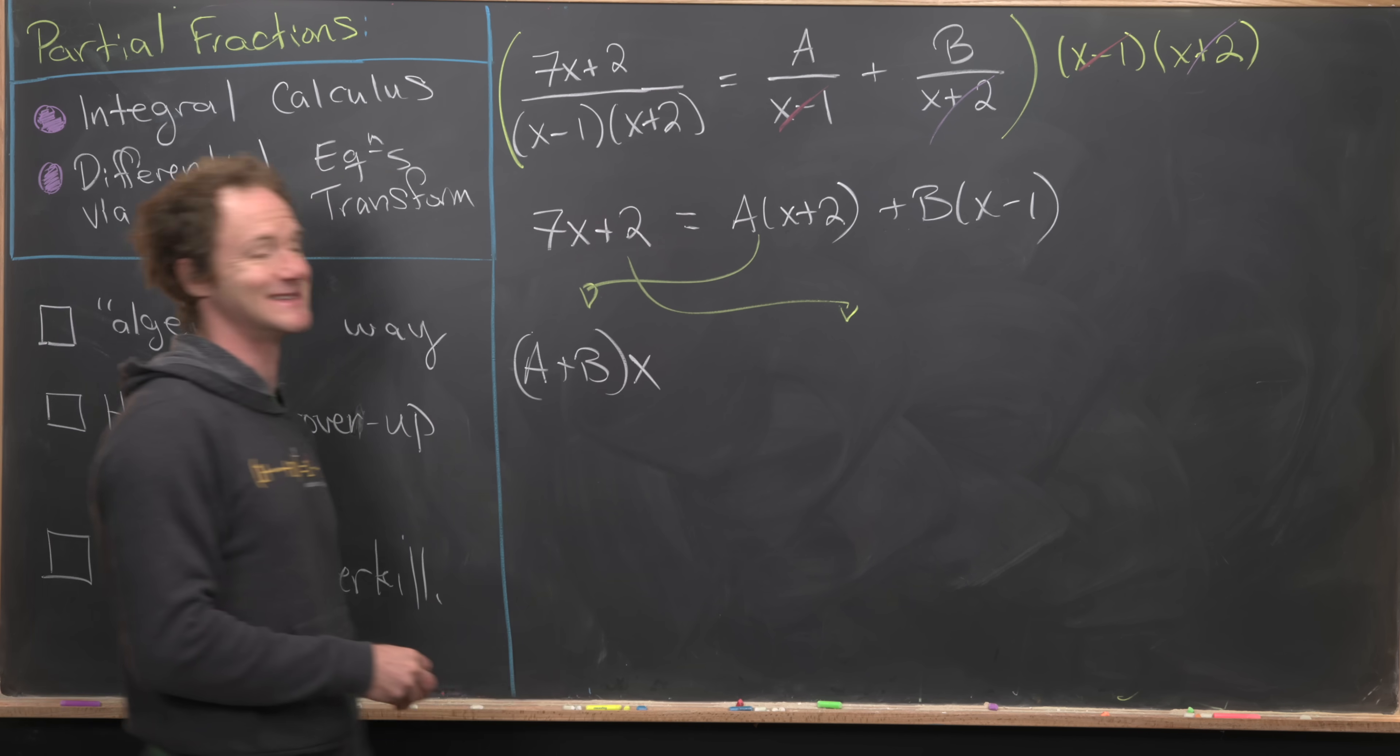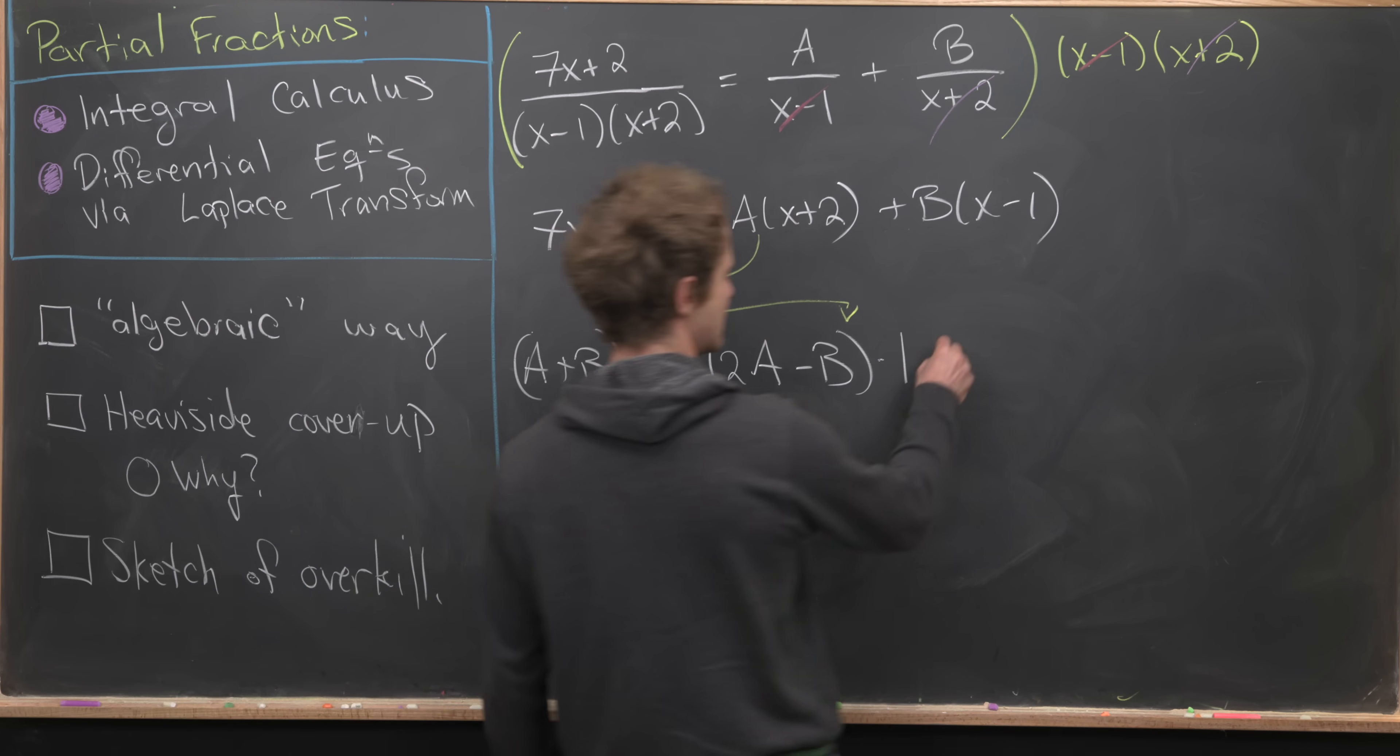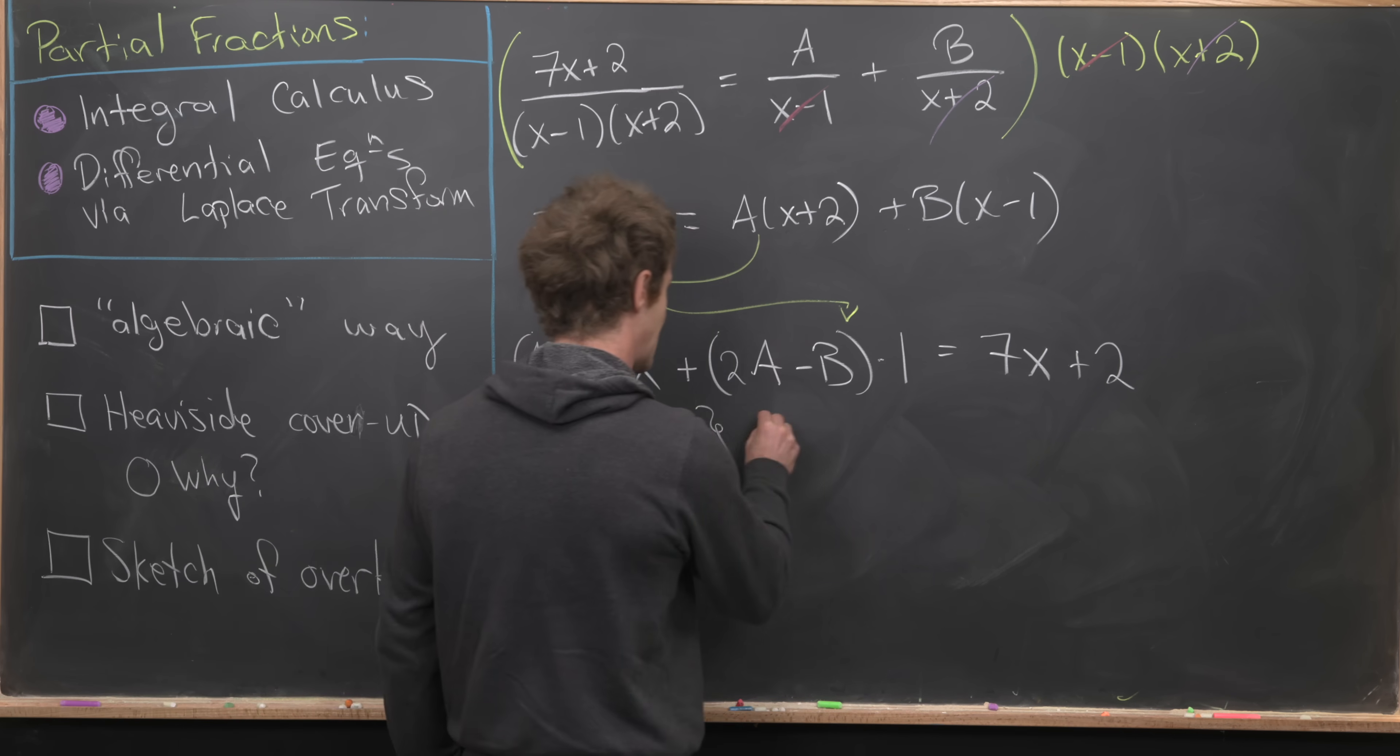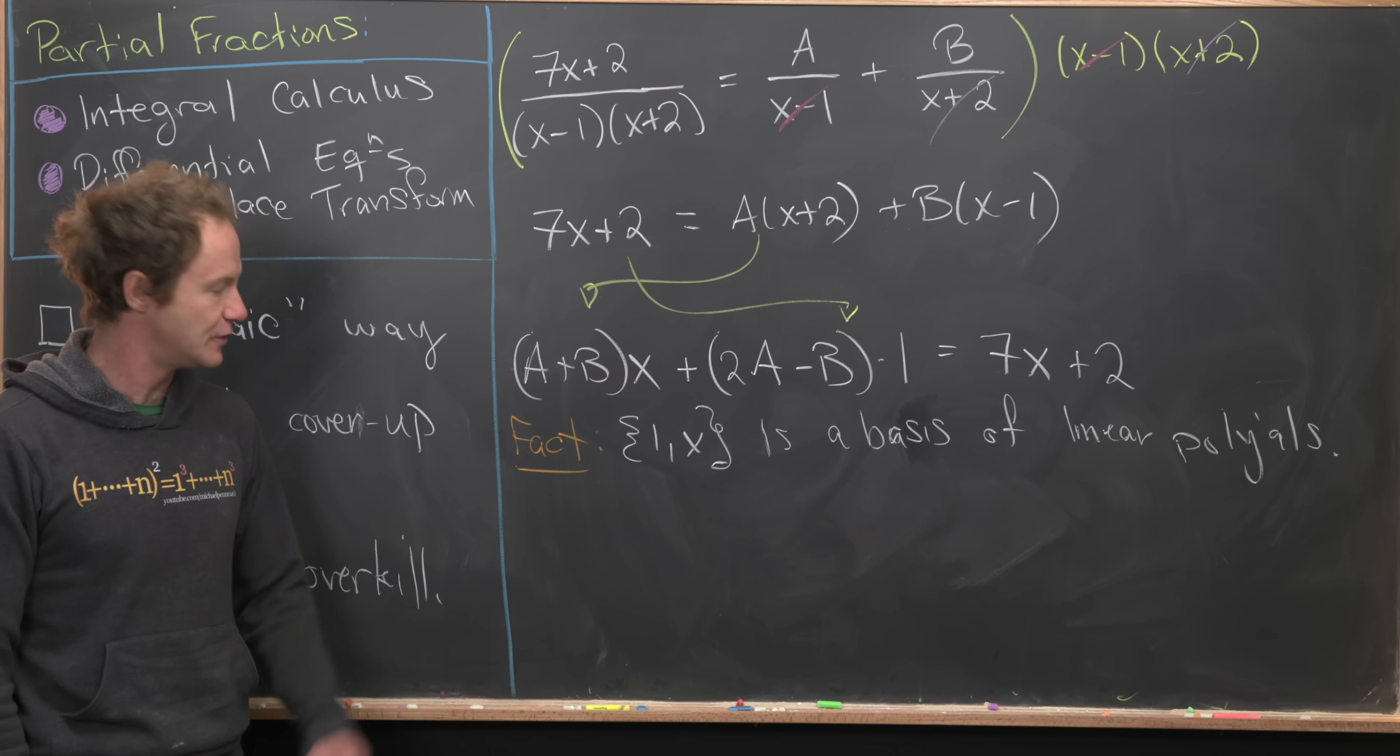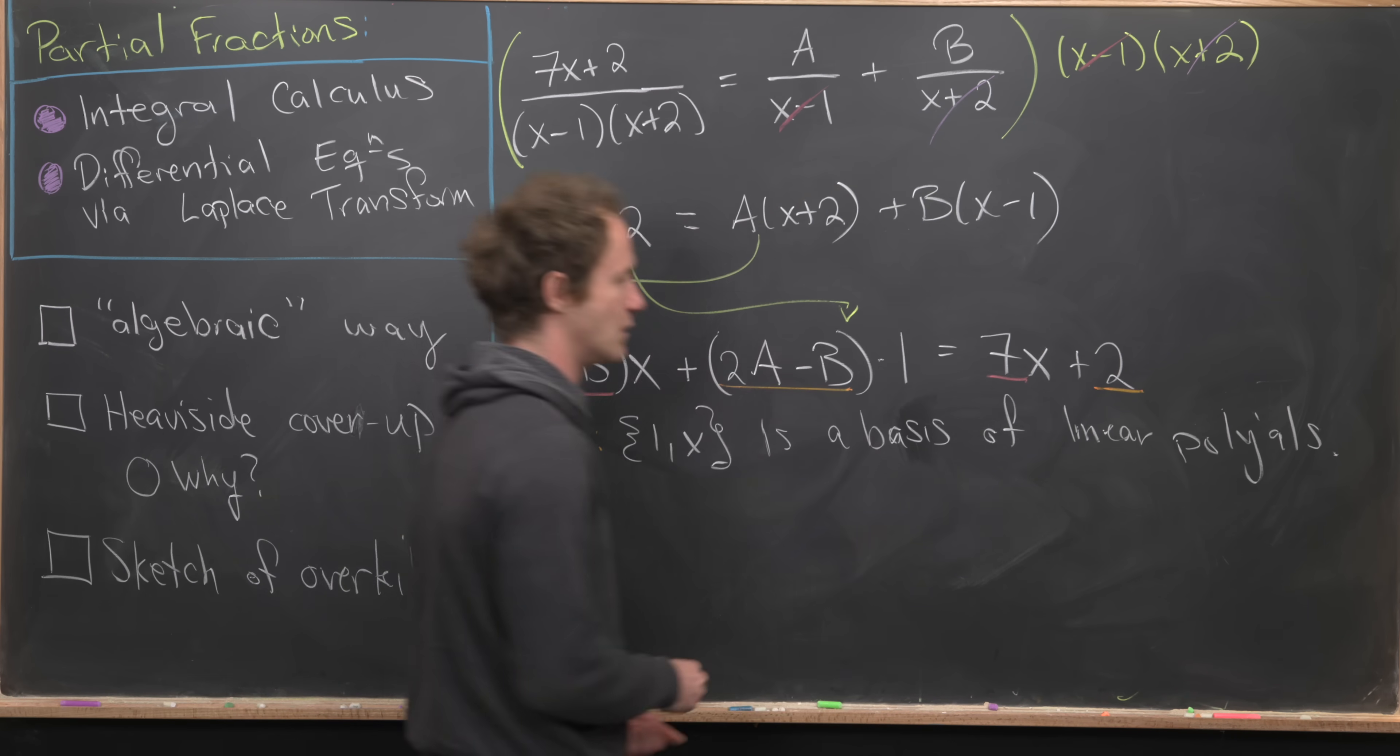Then I have 2A minus B as my constant terms. What we're really using is the fact that 1 and the indeterminate x form a basis of linear polynomials. The space of linear polynomials forms a vector space. It's a two-dimensional vector space with this basis. That's why we can set the coefficients of x on either side equal to each other, and the constants on either side equal to each other.